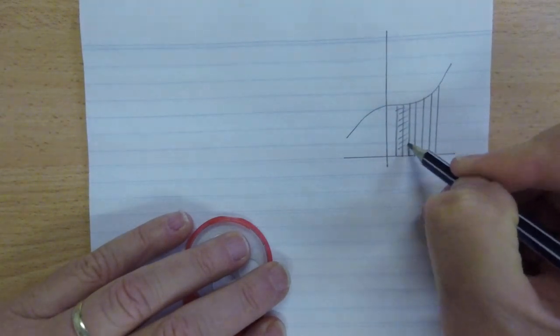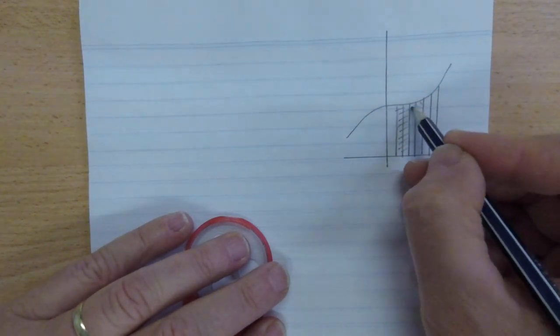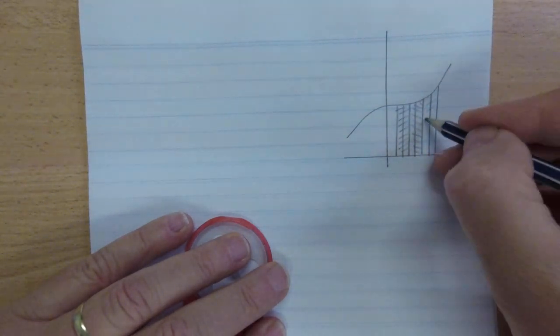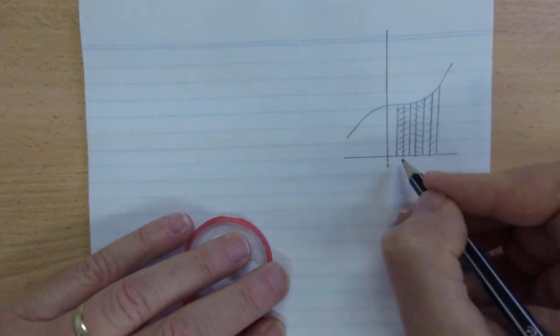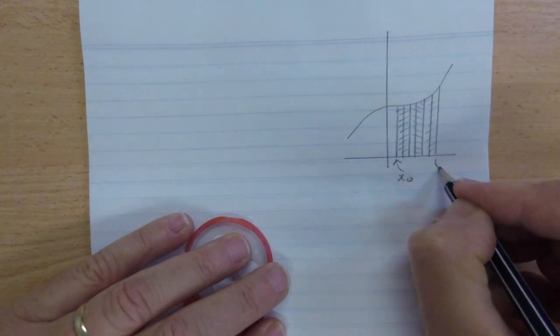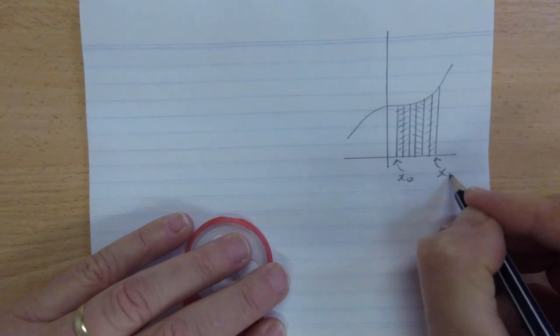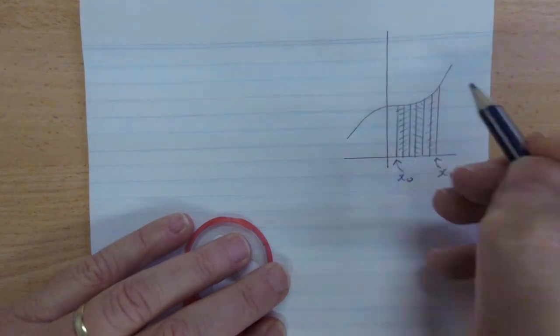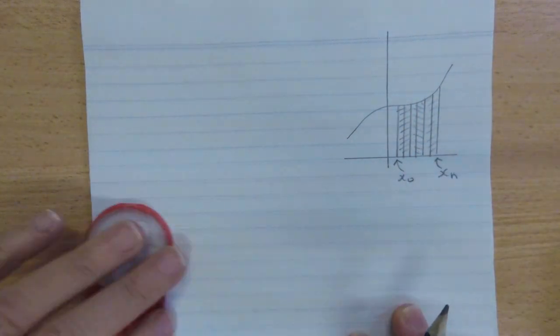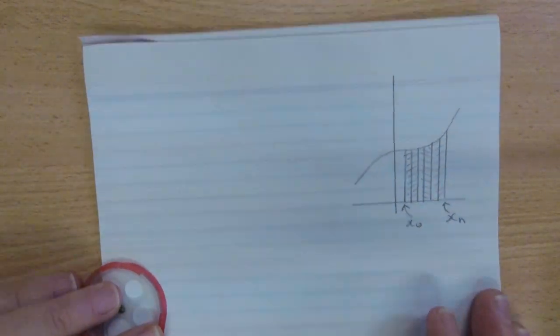So these two here, we could apply Simpson's rule. Then the next two, we apply Simpson's rule. Then the last two. Again, this one, we would call that x0 all the way up to xn. The y values, we would start with y0, y1, y2, all the way up to yn. So let's just start writing this down a little bit.